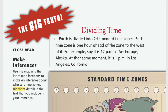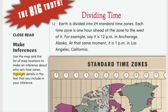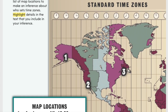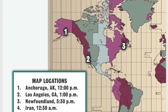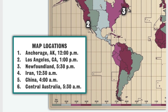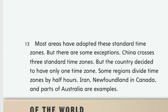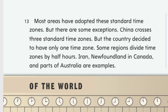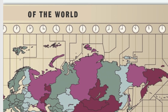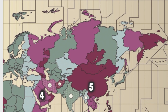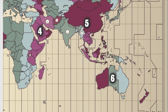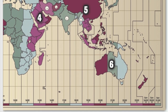Dividing times. Earth is divided into 24 standard time zones. Each time zone is one hour ahead of the zone to the west of it. For example, say it is 12 p.m. in Anchorage, Alaska. At the same moment, it is 1 p.m. in Los Angeles, California. Most areas have adopted these standard time zones, but there are some exceptions. China crosses three standard time zones but decided to have only one. Some regions divide time zones by half hours — Iran, Newfoundland in Canada, and parts of Australia are examples.